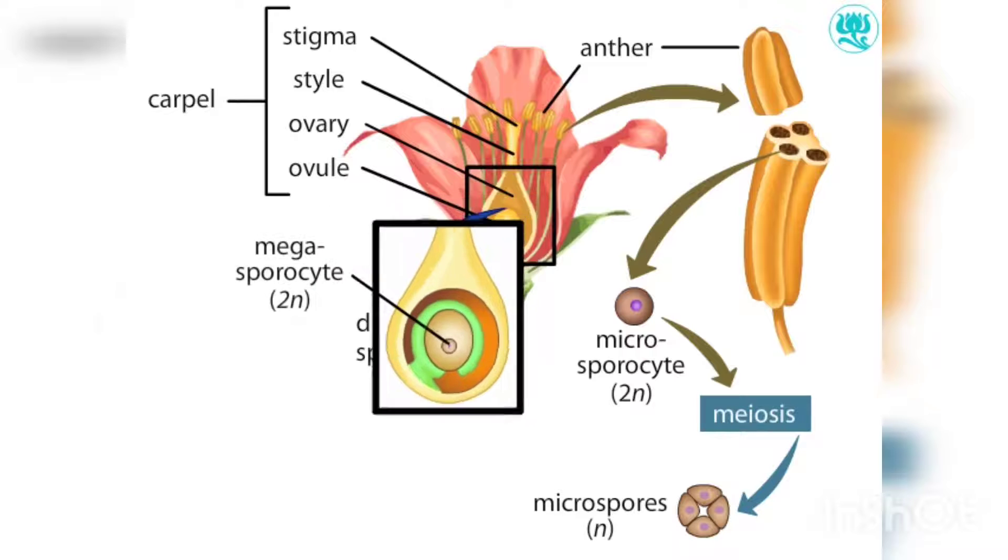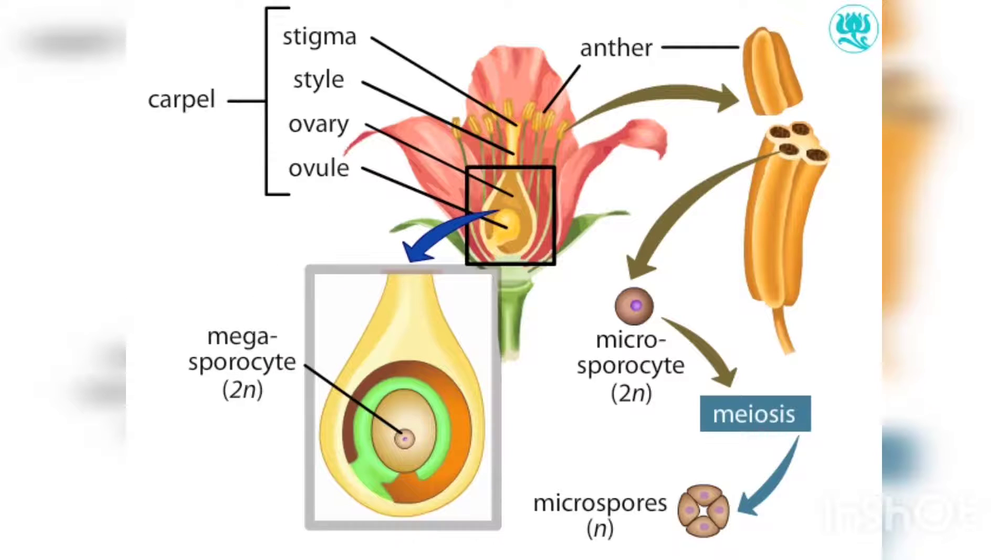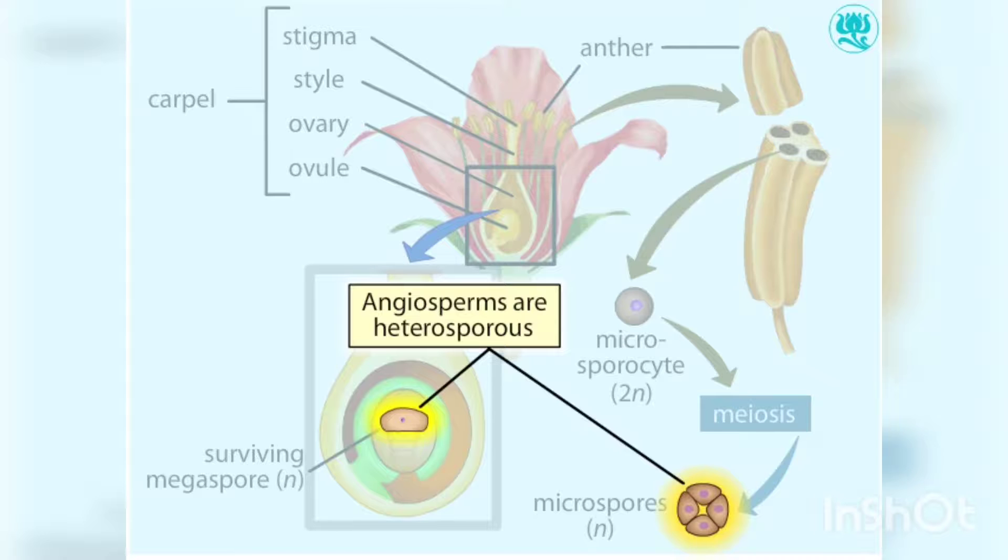A single diploid megasporocyte exists in the ovule and divides by meiosis to produce four haploid megaspores, only one of which survives. By producing two different types of spores, the microspores and megaspores, angiosperms and all other seed plants are considered heterosporous.